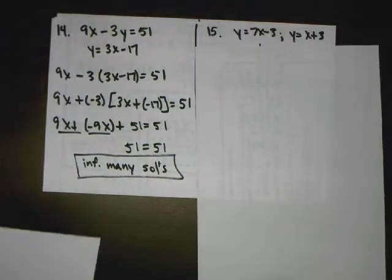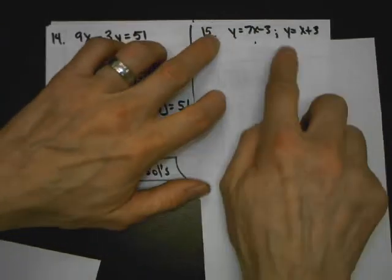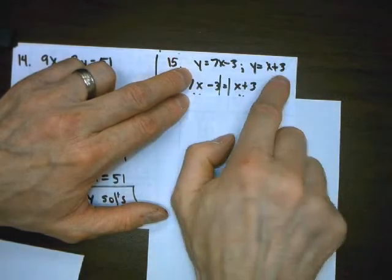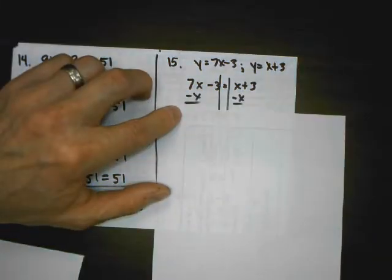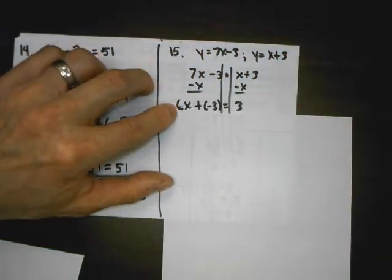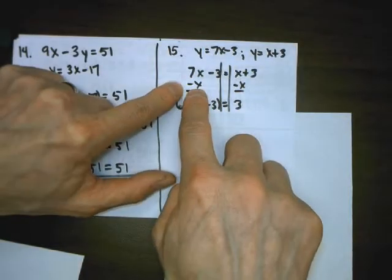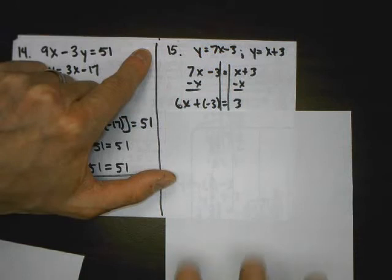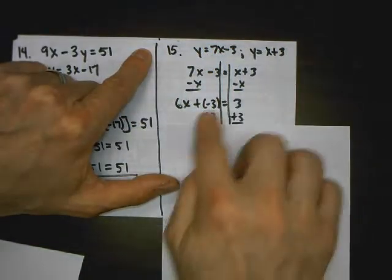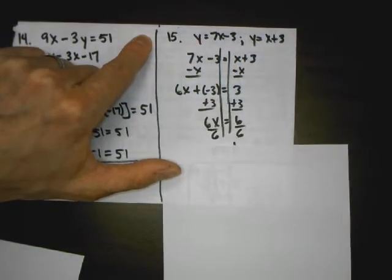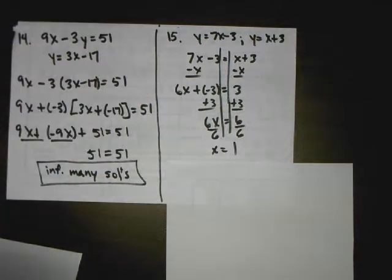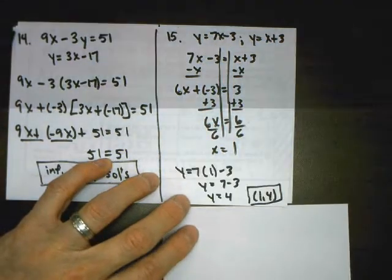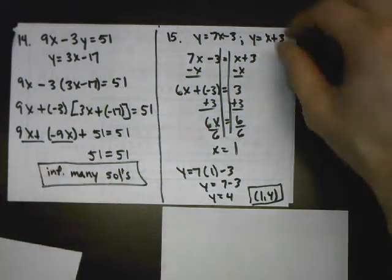Number 15: solve the system. Both y's are already isolated, so I can set the two expressions equal to each other. I get my variables on the same side: 7x take away x — I do the opposite of positive x. Work farthest from the variable: add 3 to both sides, divide by 6, and x equals 1. Now I plug 1 into either equation — both will give the same answer. The solution is (1, 4).